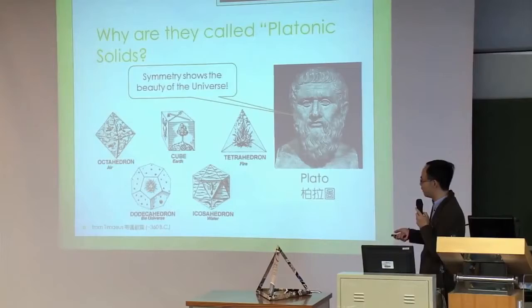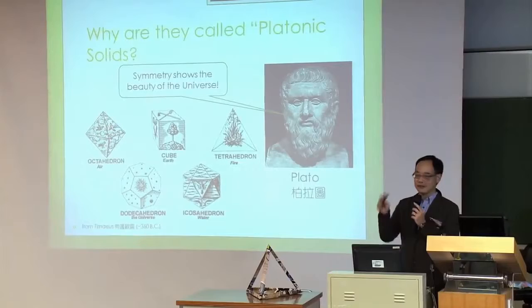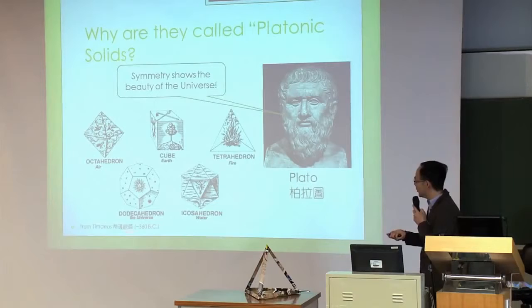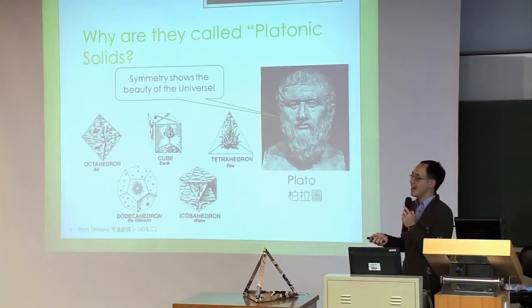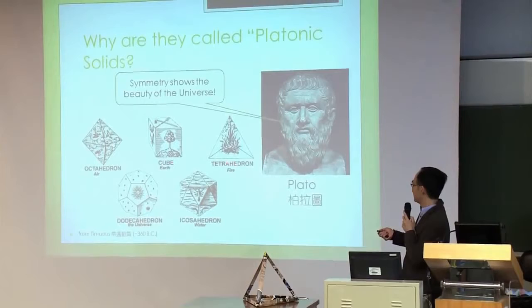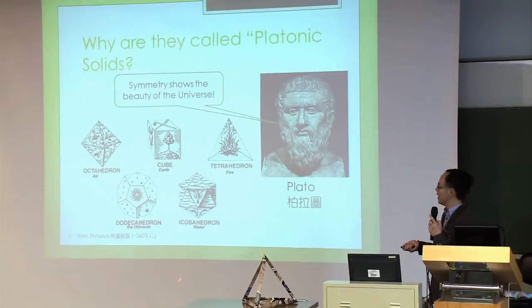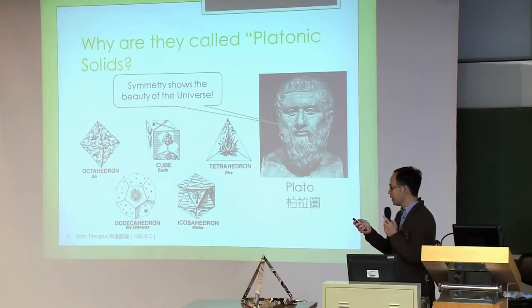Plato was so into it that he thought these solids have something to do with being the basic building blocks of our universe. This is clearly stated in one of his books called Timaeus, written around 360 BC. You may remember that for the ancient Greeks, they believed the world is made up of four elements: fire, water, air, and earth. Plato, with his own reasoning, associated these elements with some of the platonic solids. For example, the octahedron he associated with air, the cube with earth, the tetrahedron with fire, and the icosahedron - the 20-sided polyhedron - he associated with water. To the extent that he believed if you could look very closely at water molecules, this would be the shape of the water molecule.